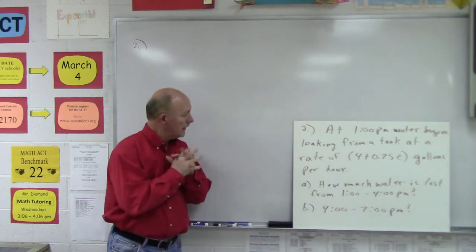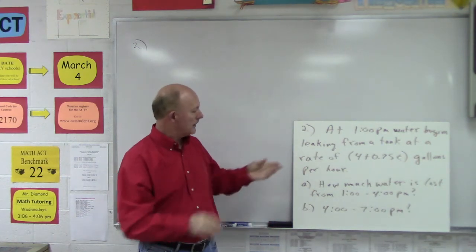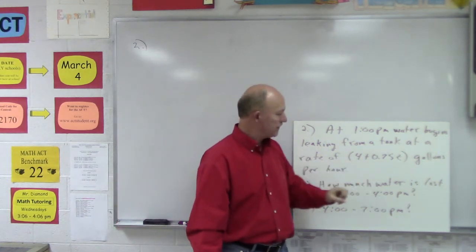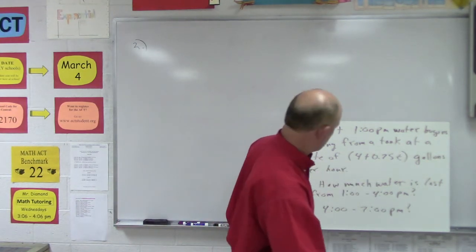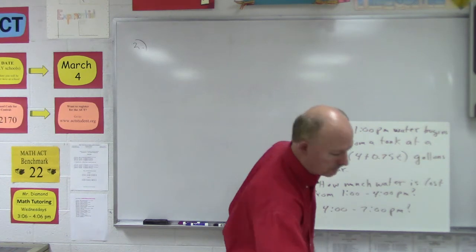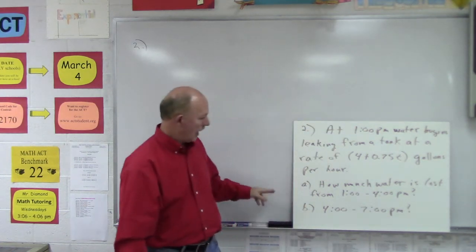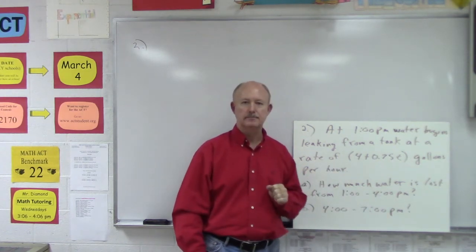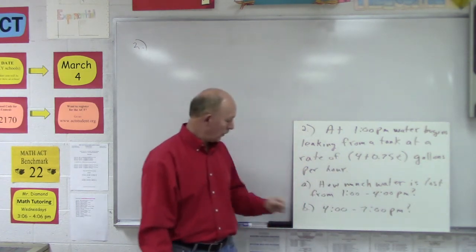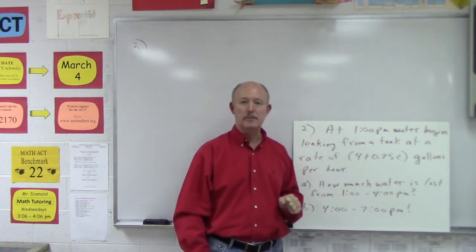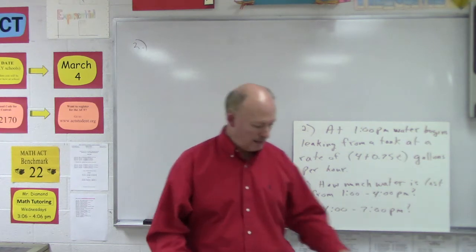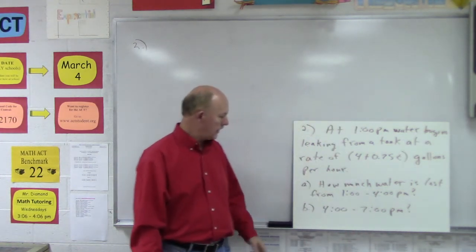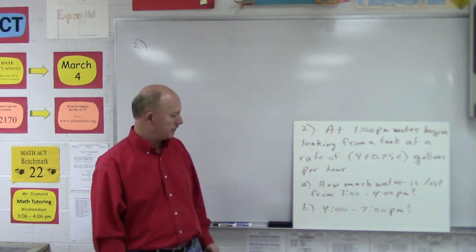Problem number two: at 1 p.m., water begins leaking into a tank at a rate of 4 plus 0.75T gallons per hour. How much water is lost from 1 p.m. to 4 p.m.? And what about from 4 p.m. to 7 p.m.? So we're finding how much water is lost over each of those time periods.